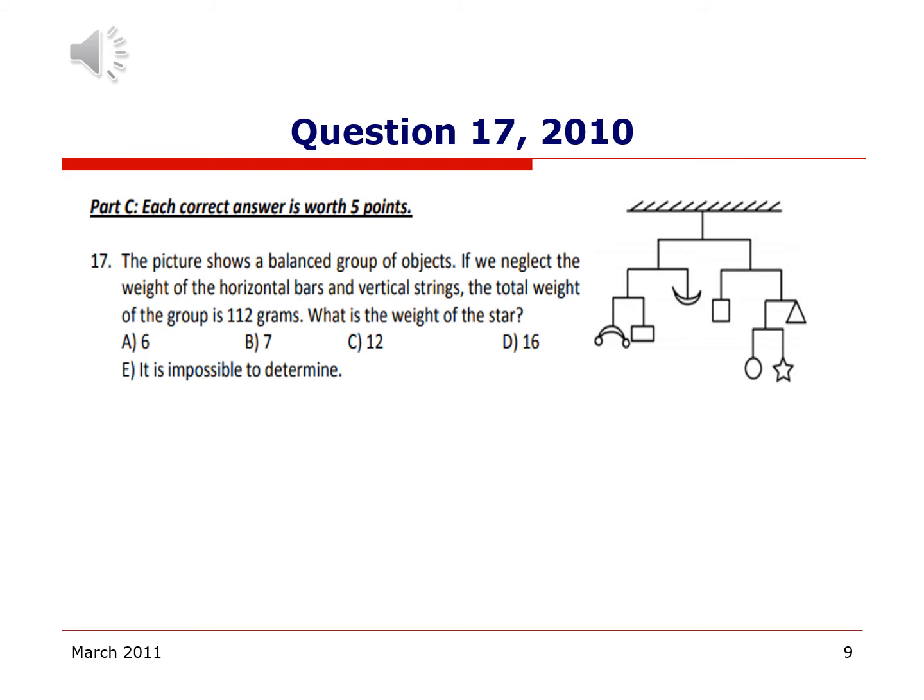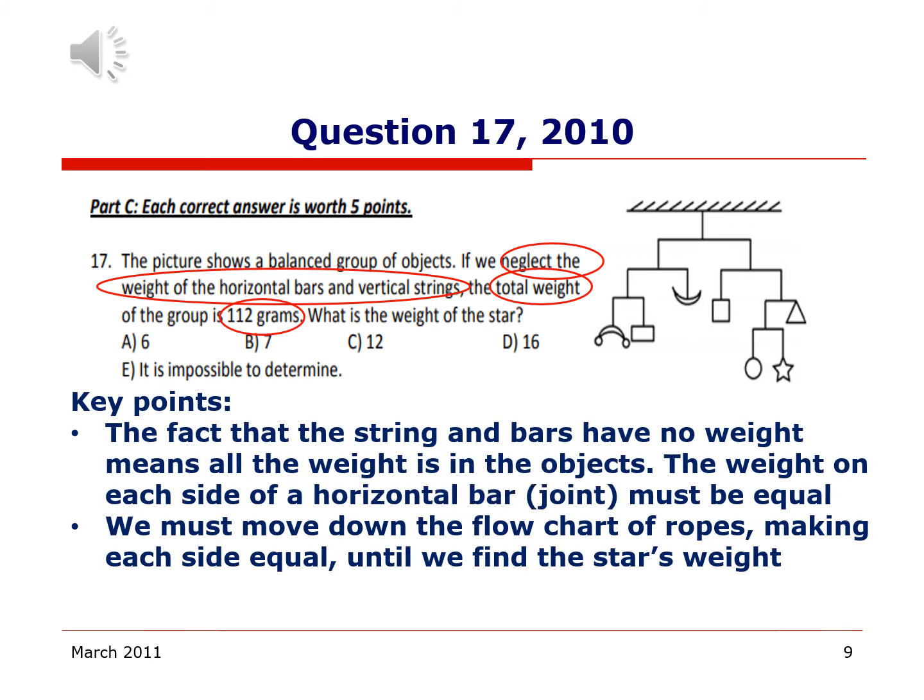Question 17 from the 2010 test involves a lot of balancing. The picture shows a group of balanced objects. If we neglect the weight of the horizontal bars and vertical strings, the total weight of the group is 112 grams. What is the weight of the star? The key information that I circled in red was really that we can neglect the weight of the string and the bars. The only thing that should be pulling anything should be the actual objects attached to the strings. If everything's balanced, that means weight on either side of a joint should be equal. We're going to have to go along each joint, make sure the weight's equal on either side by dividing the whole weight in half.